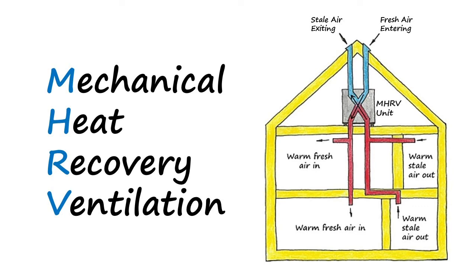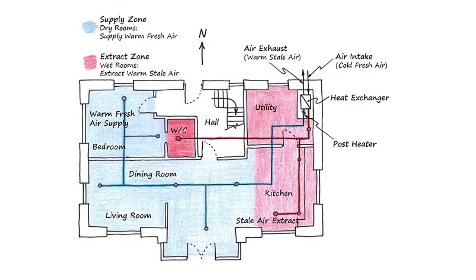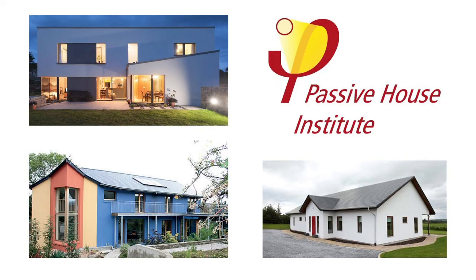With the house being so airtight it is important to use an MHRV. A mechanical heat recovery ventilation system is used to remove the stale air from wet rooms like the kitchen and bathroom and to bring in a constant supply of warm fresh air. Taking all this into account, it is clear to see that passive house construction has many positives. A passive house is an extremely efficient building and will benefit the homeowner in regards to thermal comfort, air quality, low energy bills and sustainability.